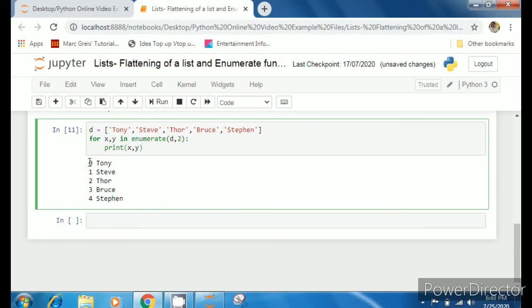Suppose I want to start my index position from 2, not from 0. Then in enumerate, along with the list name, I can write d comma 2 here. And when I run this, this list will now start from 2.